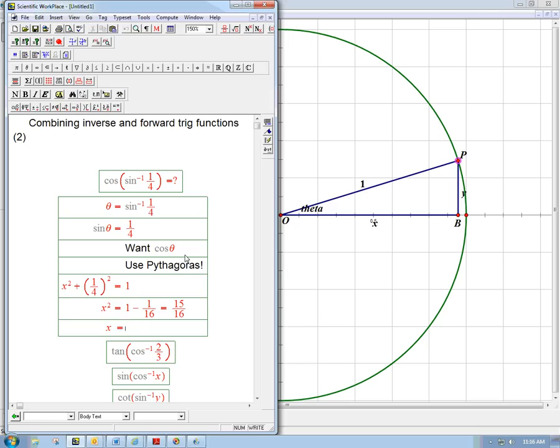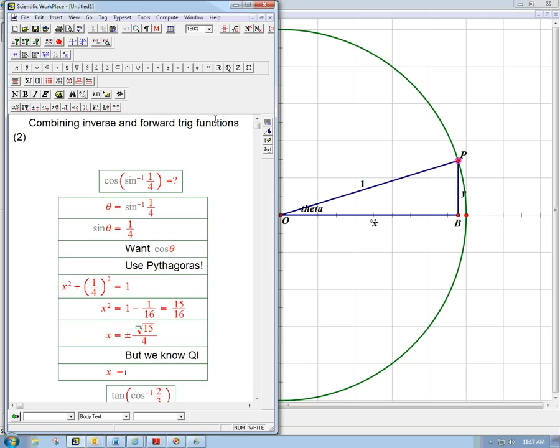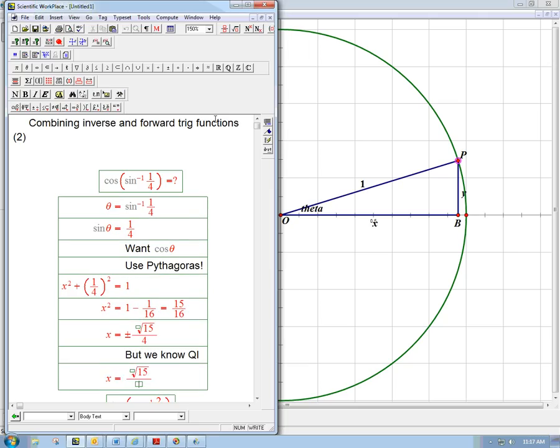And so x squared is 1 minus 1 sixteenth is 15 sixteenths. And so x, well, let's see. Let's be careful. Just from that algebra, we know it's plus or minus root 15 over 4. But we know we're in Q1, and so it's plus.